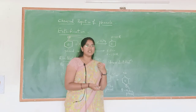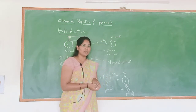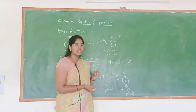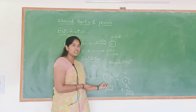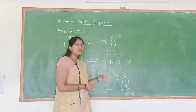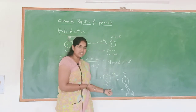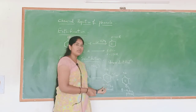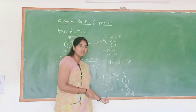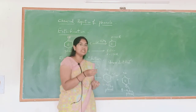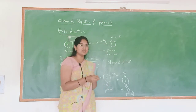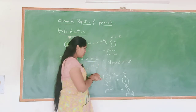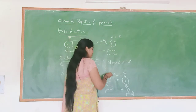So by using steam distillation process, these two can be separated because 2-nitrophenol is steam volatile. What is meant by volatility? The property to get evaporated into the environment without heating is known as volatile. So why is it volatile? Because of forming intramolecular hydrogen bonds.